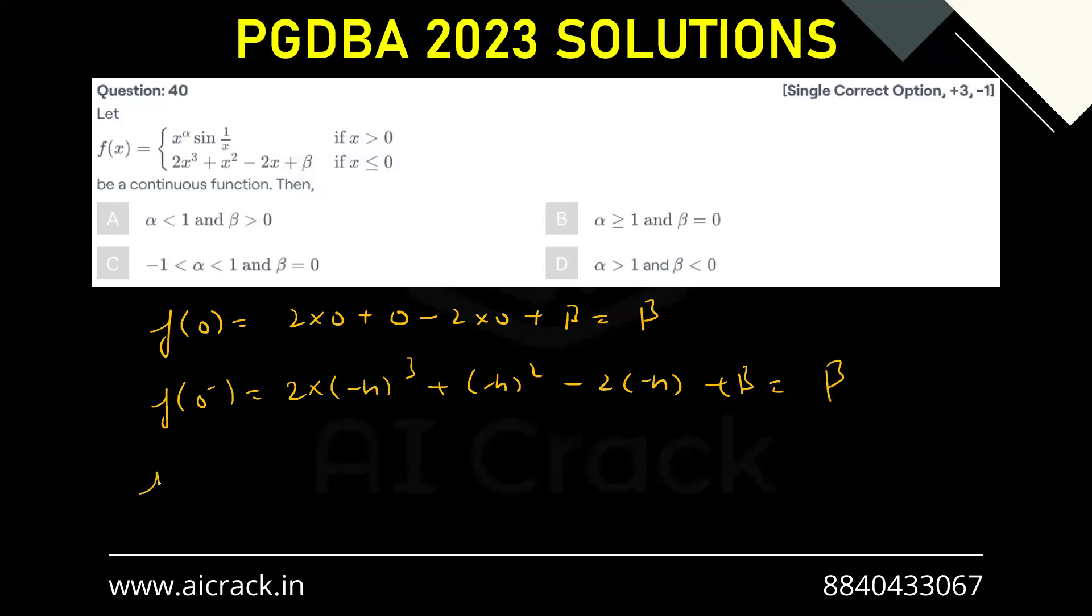Now f of 0 plus would be, we will have to use this function right. So that would be h raised by alpha multiplied by sine of 1 by h. Now since h is approaching 0 this is an oscillating limit right.